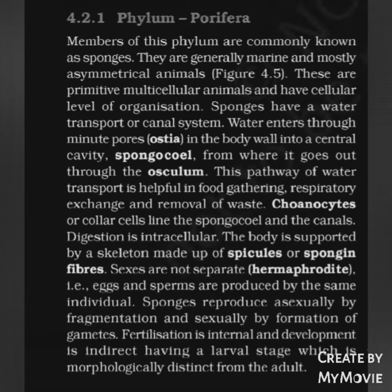Phylum Porifera: Members of this phylum are commonly known as sponges. They are generally marine and mostly asymmetrical animals. These are primitive multicellular animals and have cellular level of organization. Sponges have a water transport or canal system. Water enters through minute pores called ostia in the body wall into the central cavity called spongocoel, from where it goes out through the osculum. This pathway is helpful in food gathering, respiratory exchange, and removal of waste.